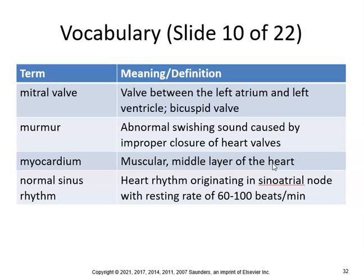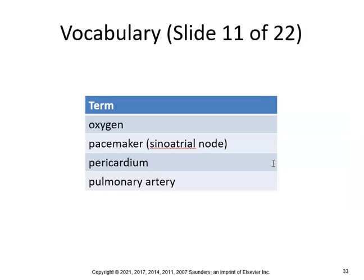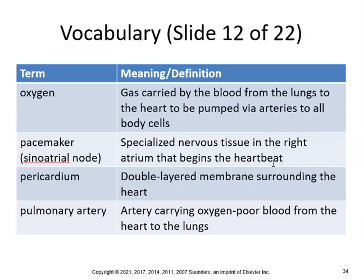The mitral valve (also called the bicuspid valve or left AV valve) is between the left atrium and left ventricle. A murmur is an abnormal swishing sound caused by improper closure of the heart valves — many people have a murmur; it isn't always life-threatening, but severe cases may require surgery. The myocardium is the muscular middle layer of the heart. Normal sinus rhythm is the heart rhythm originating from the SA node with a resting rate of 60–100 beats per minute.